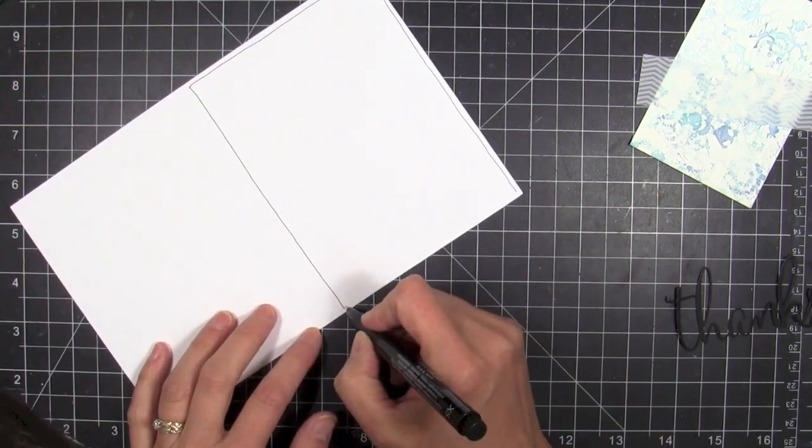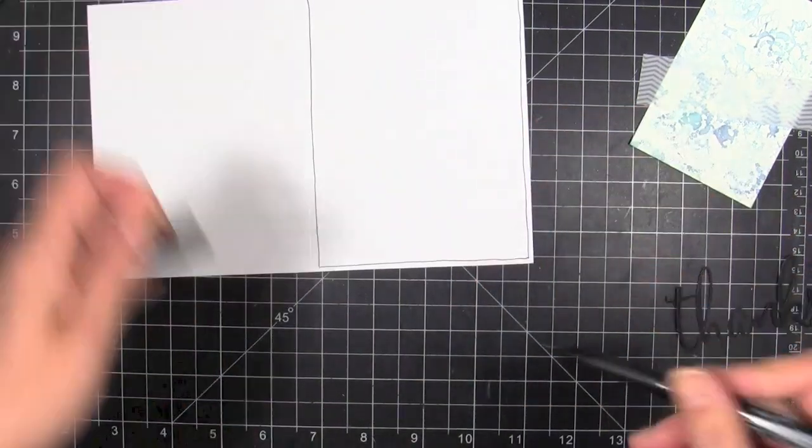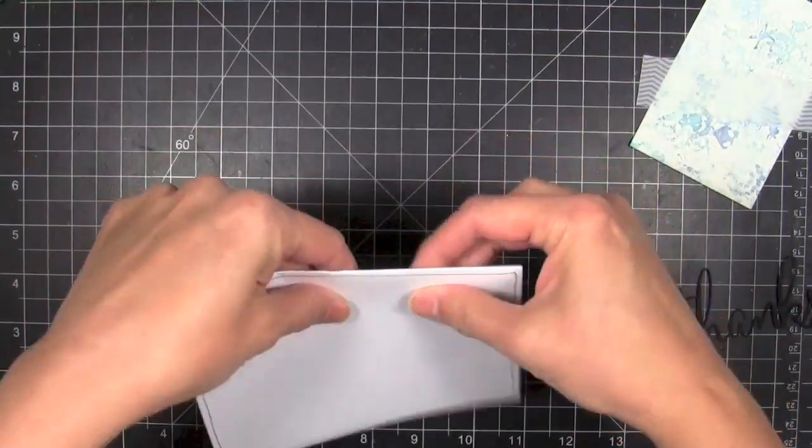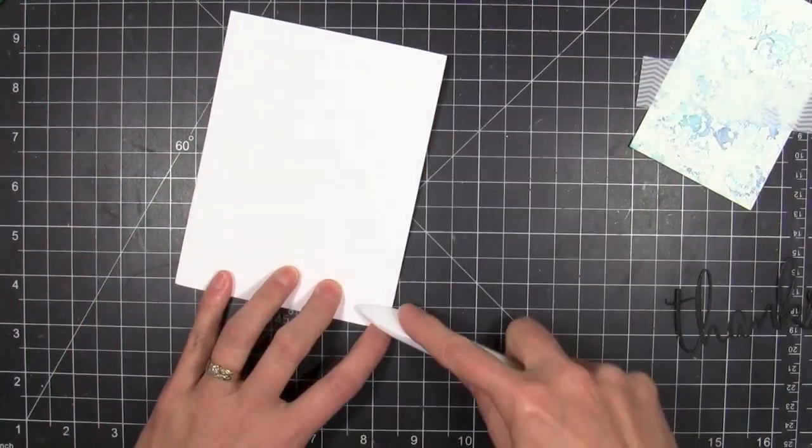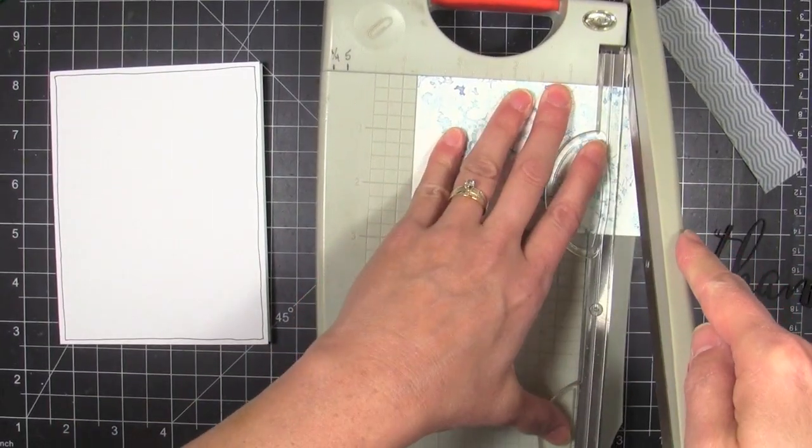A lot of times when I'm not matting the layers on my card, I like to add a little bit of visual interest around the perimeter with a fine detail line. It just seems to help draw the eye in towards your focal. I could be wrong, but that's the way I see it, and so that's why I do it.